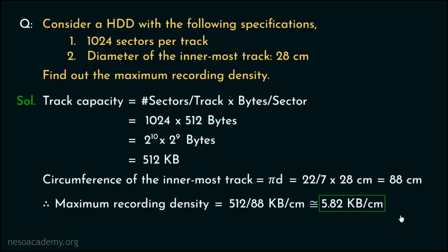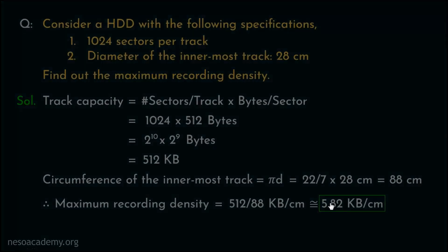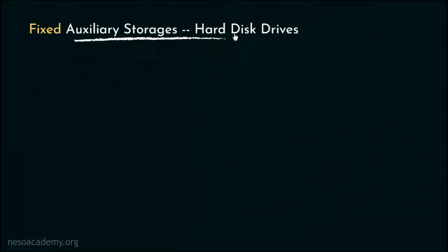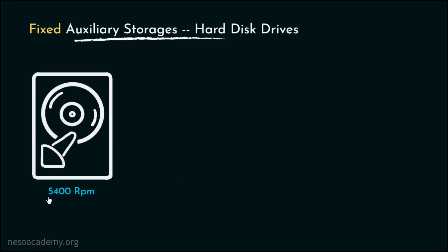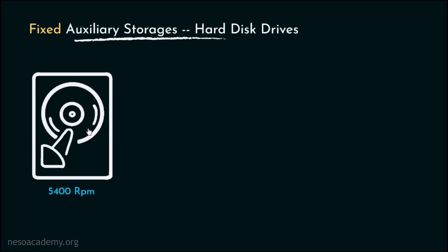Now let's move on to the next phase. The magnetic disks of the hard disk drives rotate at high speeds. Based on the rotational speed, these are classified into three different categories. The first category has the speed of 5400 rpm — rotations per minute — meaning in a minute these platters will rotate 5400 times. These are mainly used in laptop computers.